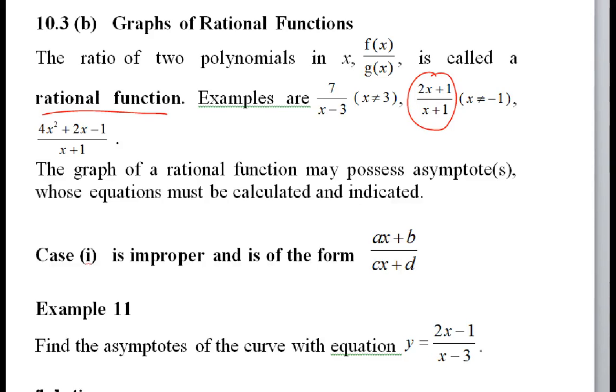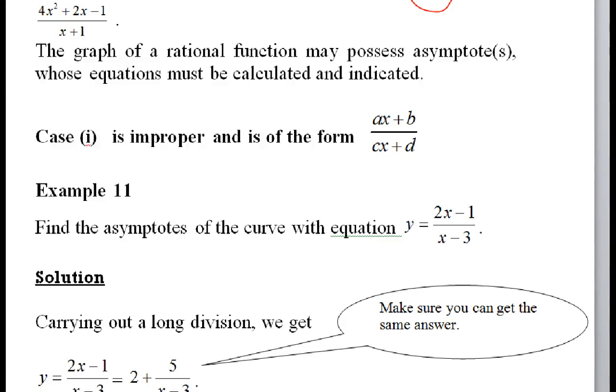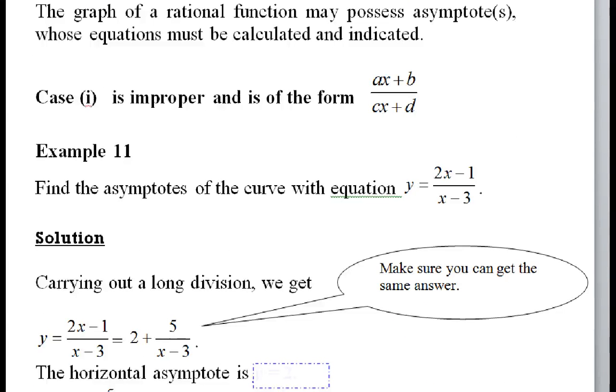A rational function is improper and of this form linear divided by linear. Improper just means that the order of the numerator is bigger than or equal to the order in the denominator. Correct? Yes. Just remember the simple rule of thumb. As long as the rational function is improper, you just do long division. Don't wait. Just do long division.